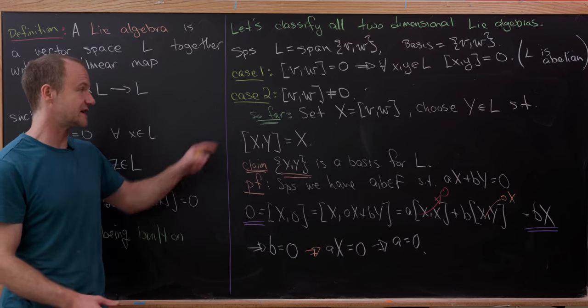Now let's look at some representations of those two-dimensional Lie algebras, starting with the Abelian case. The simplest way to think about this is two-by-two diagonal matrices of the form [A, 0; 0, B] where A and B come from the field F. You can easily check that if you take two arbitrary matrices from this set and take their bracket — their commutator — you get zero, showing this is an Abelian Lie algebra. A natural basis would be the two elementary matrices: [1,0;0,0] and [0,0;0,1].